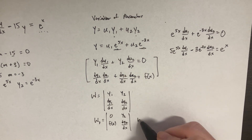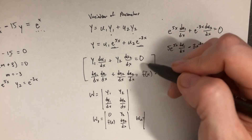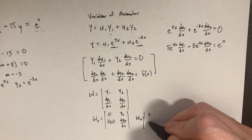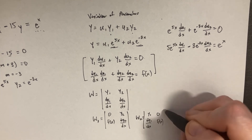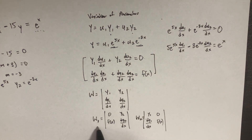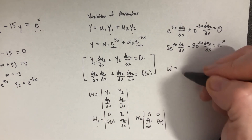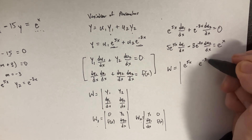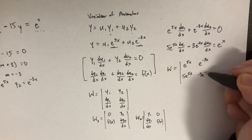To solve for du2, we plug 0 and f(x) into the y-column — so y1 and dy1/dx on the left, and 0 and f(x) in the right column. The Wronskian W = |e^(5x), e^(-3x); 5e^(5x), -3e^(-3x)|.